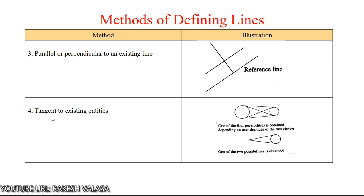The next method is tangent to existing entities. Taking two circles, we can draw tangents to them in four methods. We can draw the tangent to one circle using a line, draw the tangent to the other using another line, or draw tangents diagonally. By using four methods we can draw tangent lines for two circles. For a circle and a point, there are two possibilities for constructing tangents.